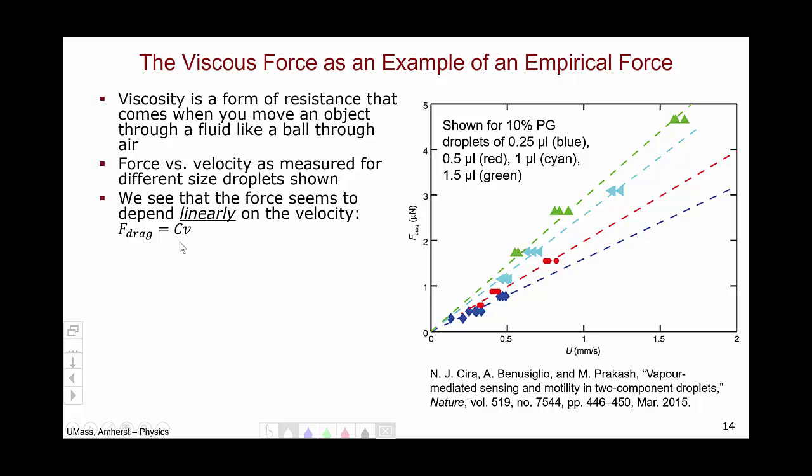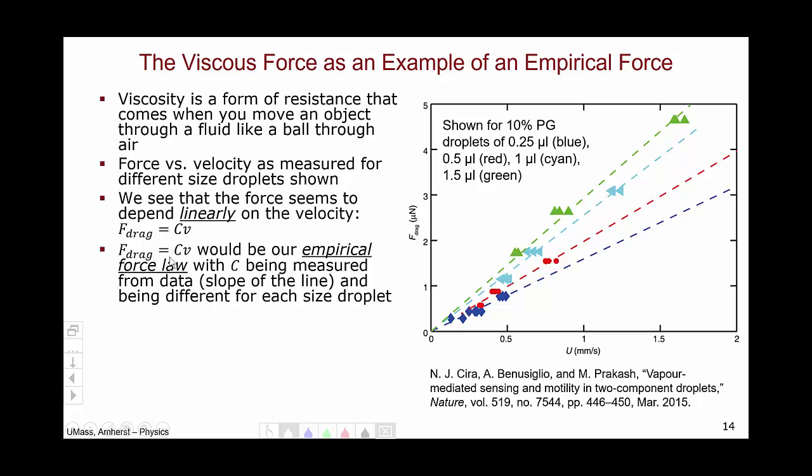So, we would say that the empirical force law for this force is F equals Cv. It's a force law derived from looking at data and contains a constant C, which must be measured from the data. In this case, C is the slope of the line and is clearly different for each size droplet. These are characteristics of empirical forces. The force law is derived from looking at data, and often there are properties that depend upon what you're looking at, in this case the size of the droplet.